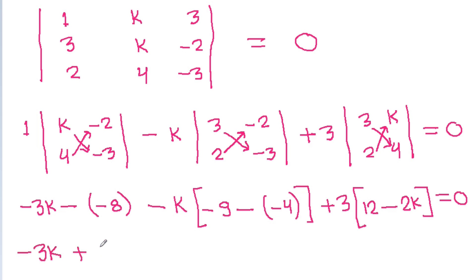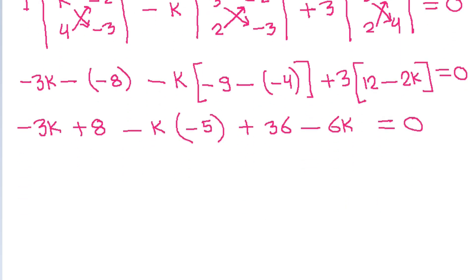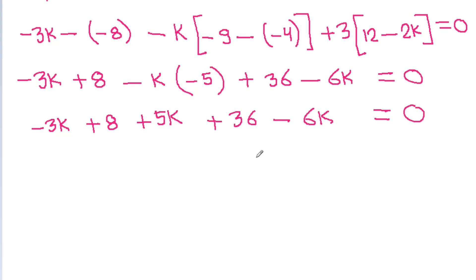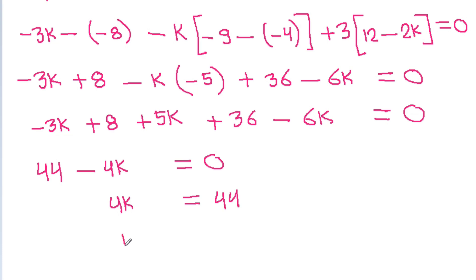And this simplifies to: minus 3k minus 8, minus k times (minus 9 minus 4 = minus 5), plus 36 minus 6k equals 0. That gives minus 3k minus 8 plus 5k plus 36 minus 6k equals 0. Combining k terms: minus 6k minus 3k plus 5k is minus 4k, and minus 8 plus 36 is 28, so minus 4k plus 28 equals 0, giving 4k equals 44, or k equals 11.